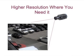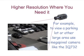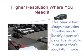You can select a higher resolution camera where you need it. For example, to view a parking lot or other large area, use a megapixel camera like the IQ732. This camera has enough resolution to allow you to identify a person or a license plate in an area that's about 48 feet wide.